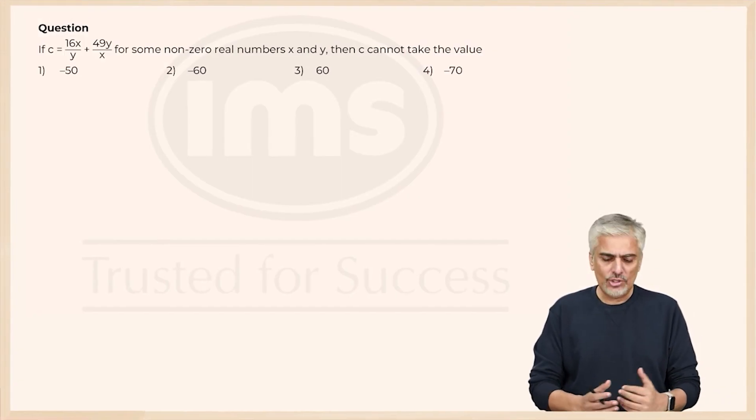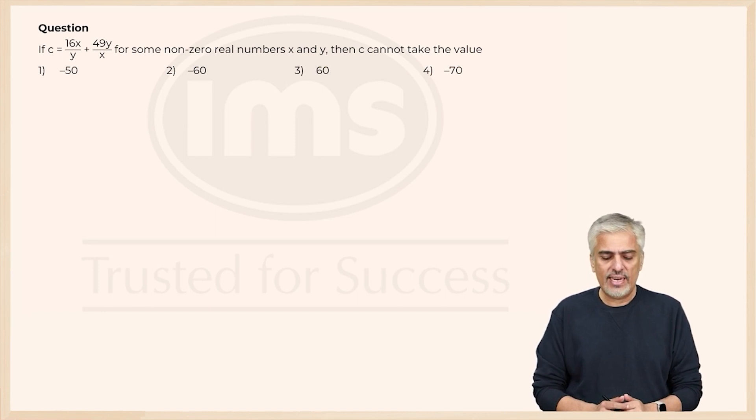Let's have a look at the next question. They have told us C is equal to 16x upon y plus 49y upon x for some non-zero real numbers x and y. Then C cannot take what value. Let's try and understand this.